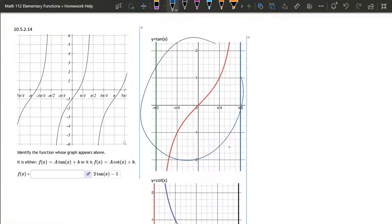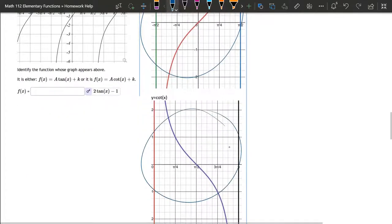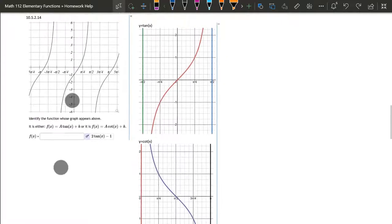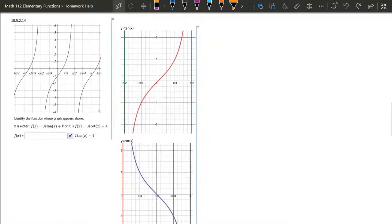So tangent is an increasing function, cotangent is a decreasing function. Other than that, they look pretty similar. And we clearly have an increasing function, so we have a tangent here, not a cotangent.